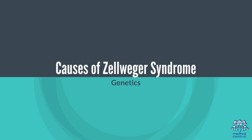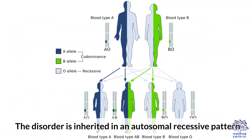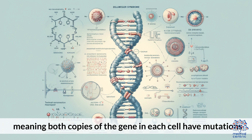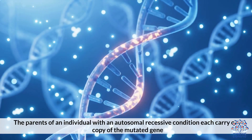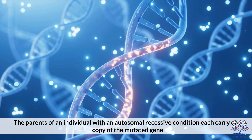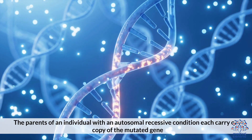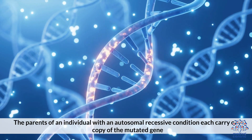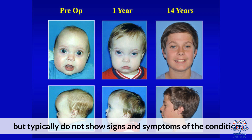Causes of Zellweger Syndrome — Genetics: The disorder is inherited in an autosomal recessive pattern, meaning both copies of the gene in each cell have mutations. The parents of an individual with an autosomal recessive condition each carry one copy of the mutated gene but typically do not show signs and symptoms of the condition.